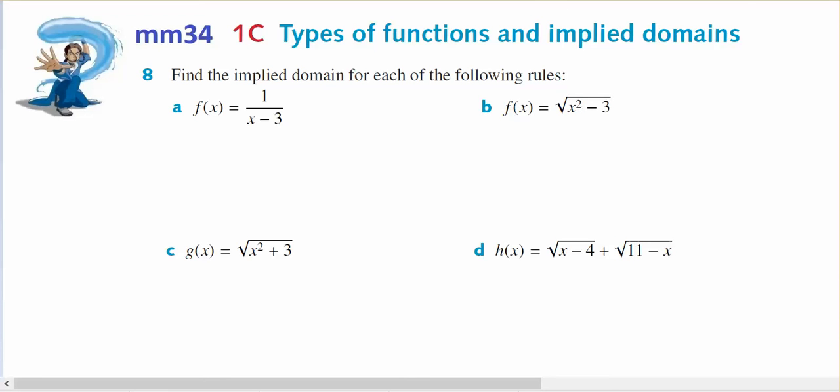When we have implied domains, there are three conditions that will give us our implied domain. One of them is the division by zero, and that's not possible. Another one is the square root of a negative number, and the third one is you can't take the logarithms of zero or negative numbers.